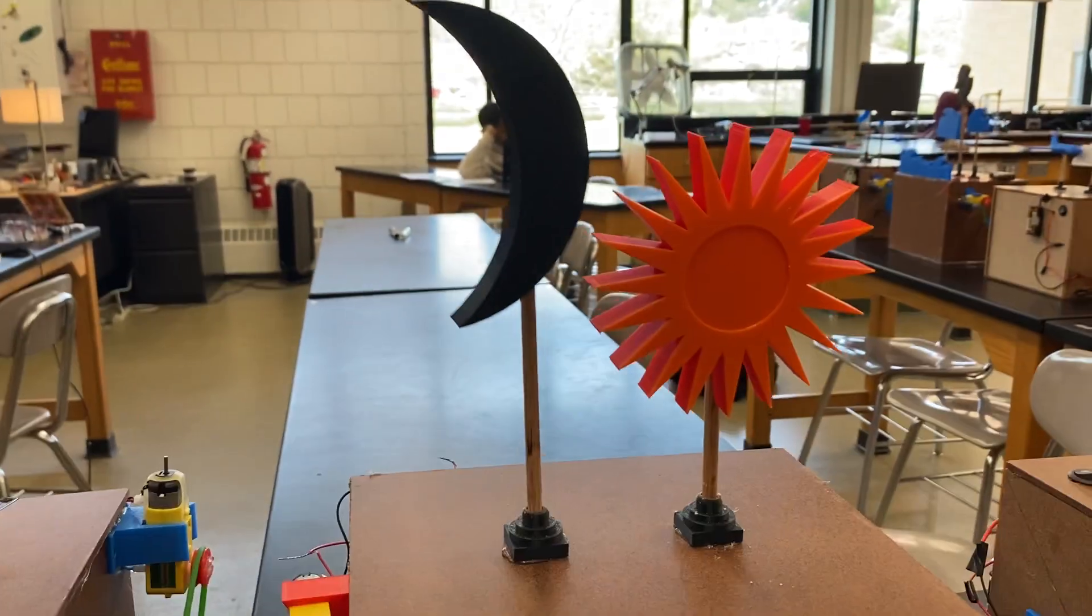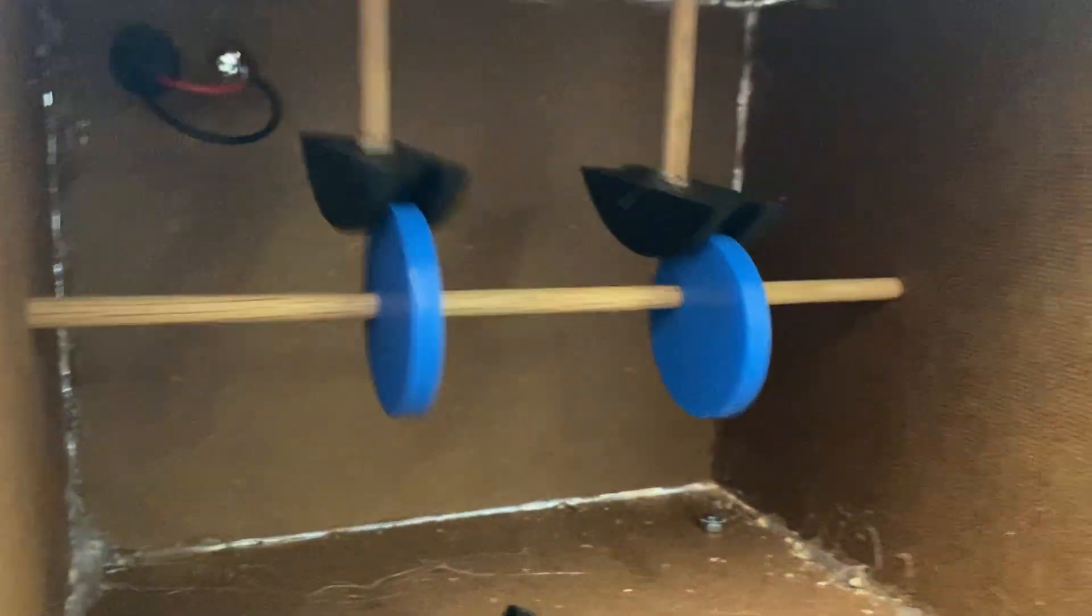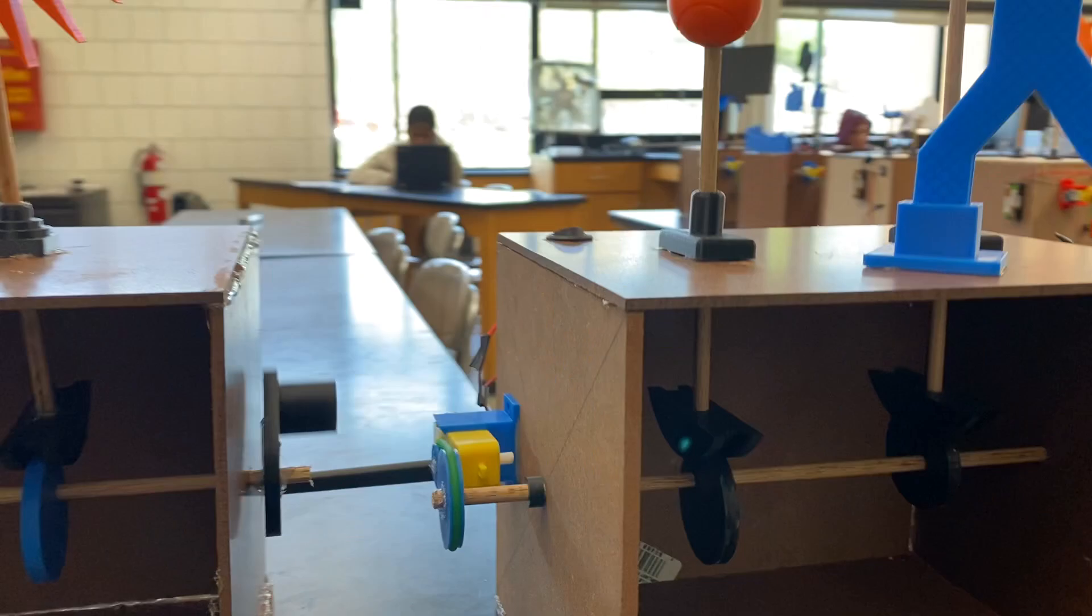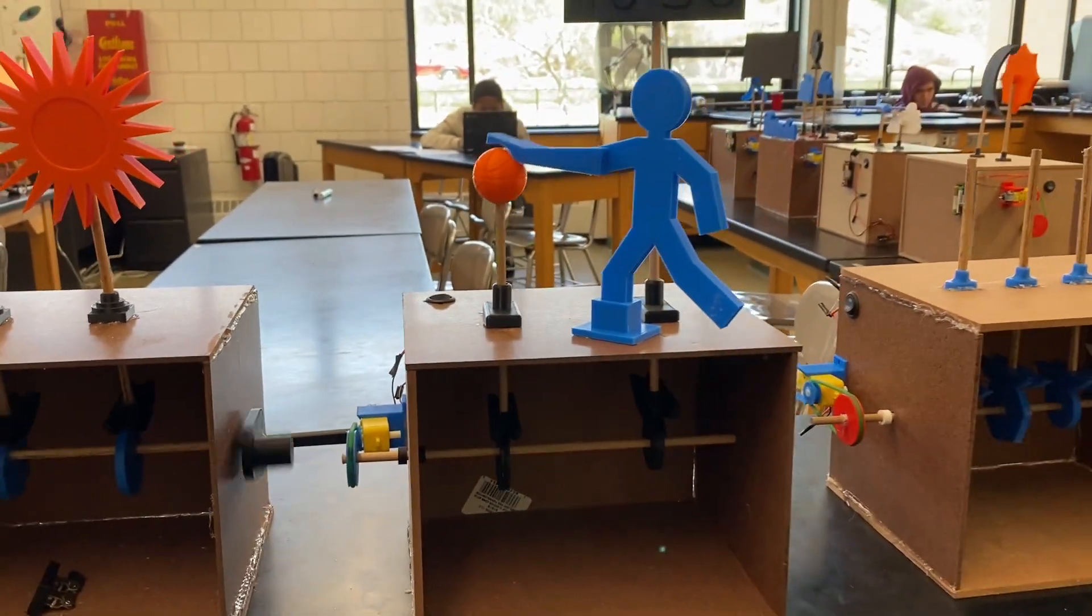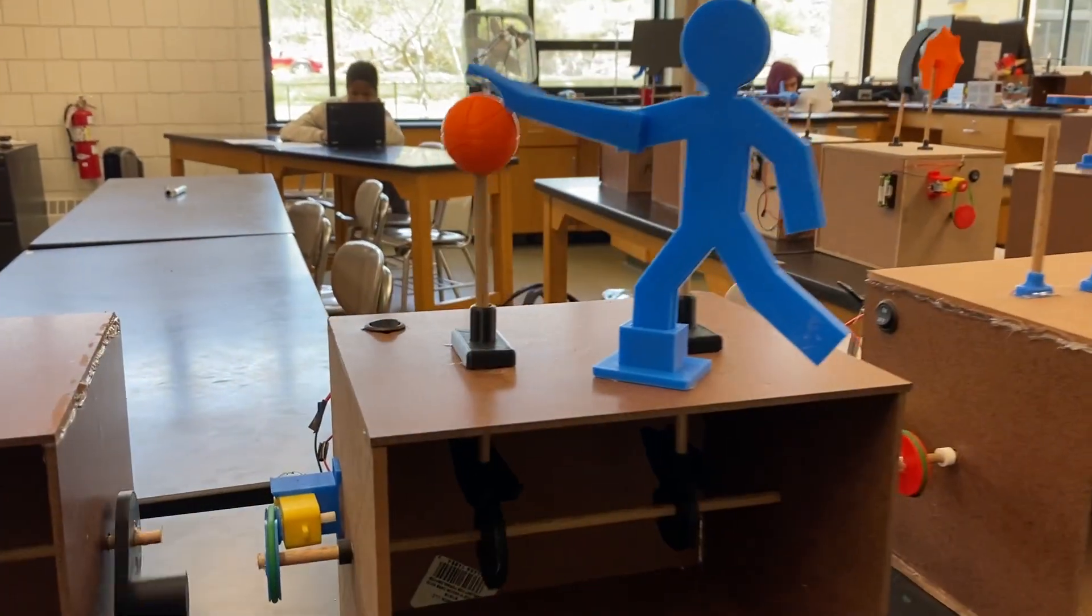Here we have a sun and a moon, driven by those cams. Basketball player dribbling the ball down the court.